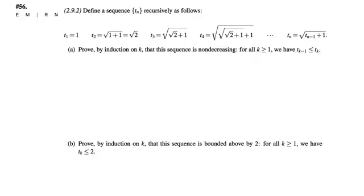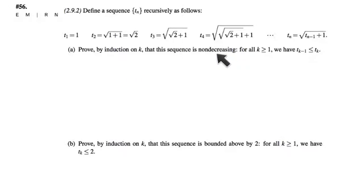Our ultimate goal in number 56 is to show that this sequence is convergent. But that would be a nightmare using epsilon-N straight ahead, because we don't have an explicit formula relating n to t_n — only a formula relating the nth term to the (n−1)th term. So we're going to approach this differently, by showing that the sequence is non-decreasing and bounded above by two.